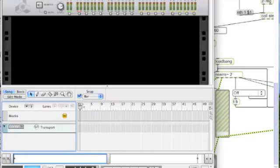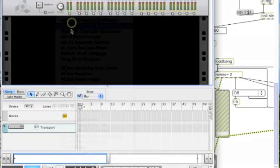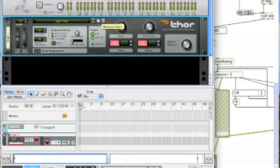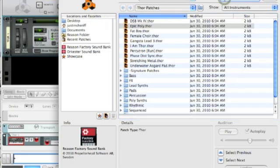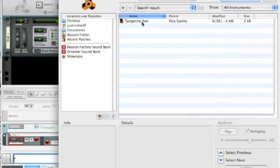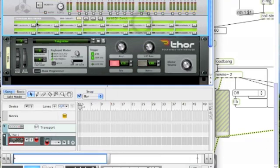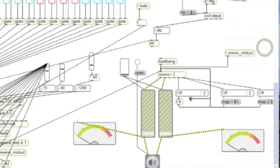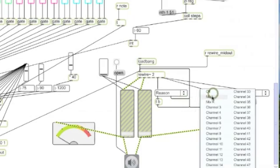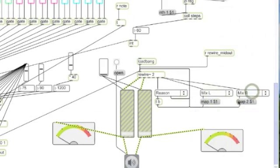You can see Reason automatically went into ReWire slave mode, hooking itself up to Max. We'll upload Thor, load a preset, go to Advanced MIDI Channel 1, make sure Thor is selected, go back to Max, select Reason, select what channels it's hooked up to - in this case, Mix Left, Mix Right - set the volume slider.